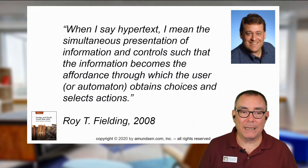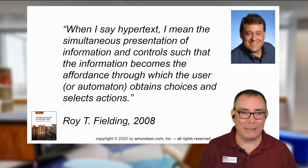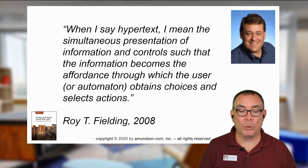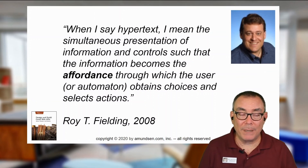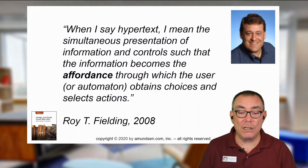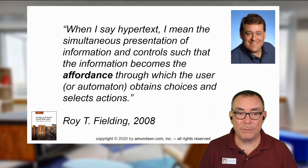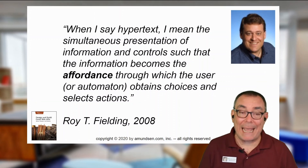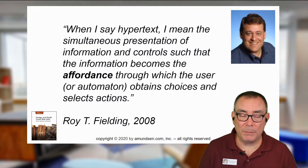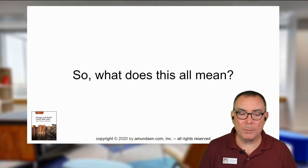I usually talk about Roy Fielding in the same conversations I talk about Leonard Richardson. Roy has talked about this idea of how hypertext or hypermedia was really important. He had this idea of how it presents both information and controls, such that the document you get back is the affordance that the user or the machine can use to obtain choices — so it's really using hypermedia to enable people to make choices. This takes a little bit more work and a little bit more planning, and that's why it's a little bit higher up on the scale.